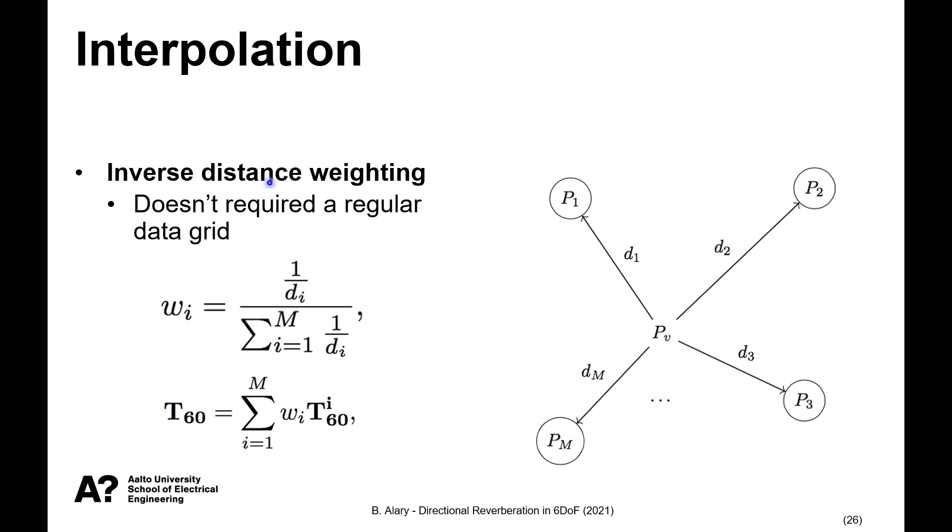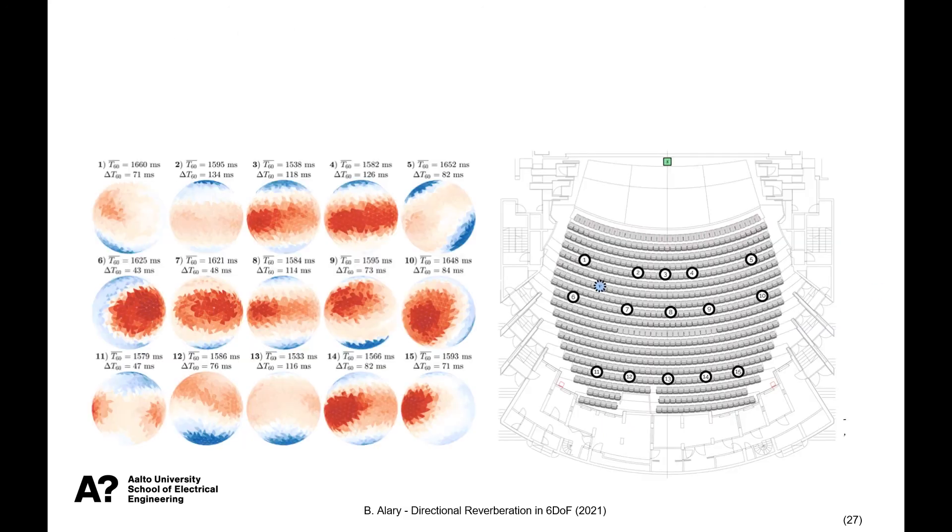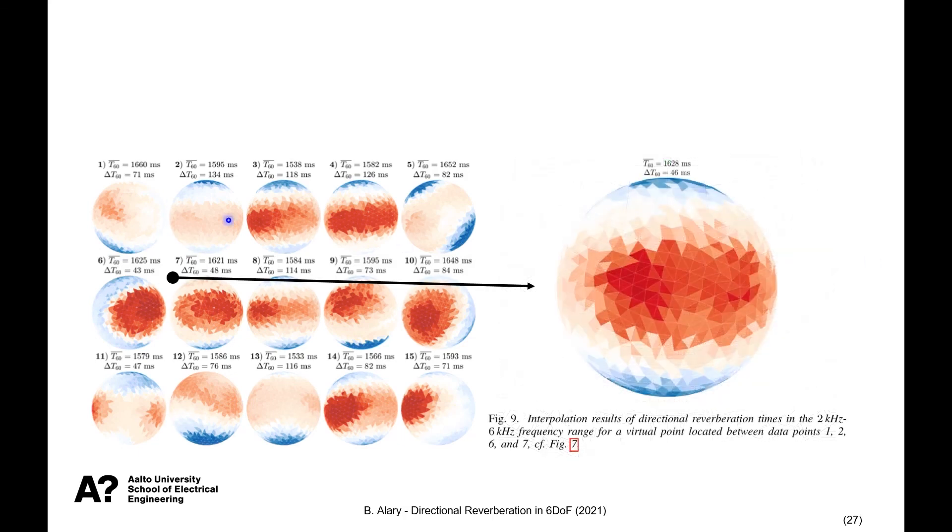And now if we want to interpolate between the set of data points, we can use a technique called inverse distance weighting. And the main benefit of this is that this doesn't require aligned points on a grid. And we're simply collecting all the distances from a virtual point to the surrounding points to calculate a weighted distance for each. And this in turn is applied to their various properties, like in this case, direction dependent T60. So for example, if we want to reproduce this virtual point between point 1, 3, 6, and 7, represented here, we interpolate each angle between the surrounding points and we can reach this representation here.